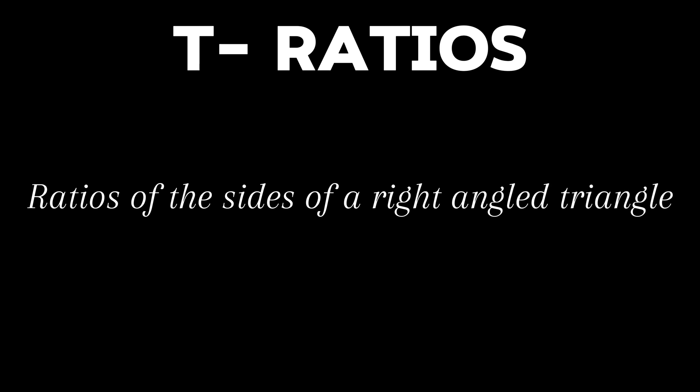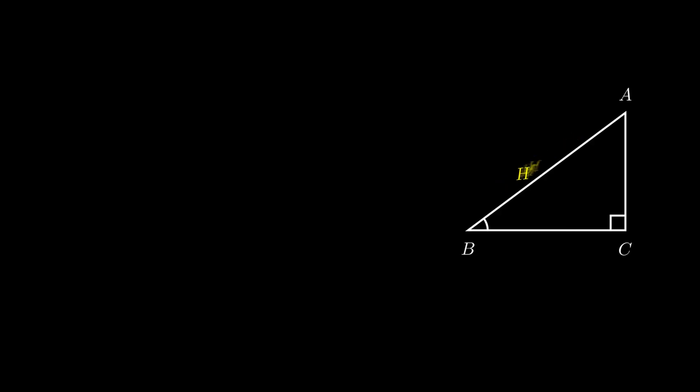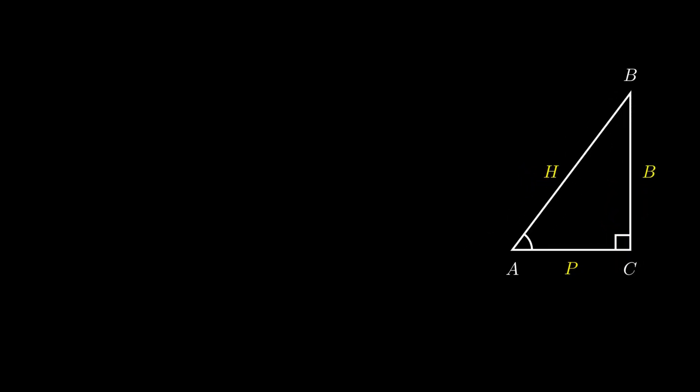Let's now understand trigonometric ratios. As the name suggests, these are the ratios of the sides of a right angle triangle with respect to its acute angles. Consider right angle triangle ABC where B is an acute angle. The longest side AB is called the hypotenuse. The side opposite to the acute angle B is AC, known as perpendicular. The side adjacent to angle B is BC, known as the base. It is important to note that perpendicular and base interchange their positions if we consider the other acute angle A.